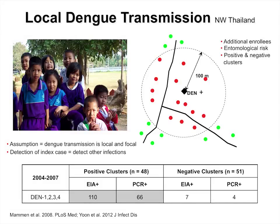Over a four-year period, we had children initiating clusters from all four dengue serotypes — almost 100 clusters total. Whether we detected infection by antibody or viral RNA, it was much higher for the positive clusters than for the negatives. We had actually picked 100 meters because we thought that was about as far as we could go and handle all the work. But within 100 meters, both infected mosquitoes and humans were clustered within that really small area — and we were actually surprised by that.